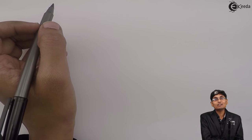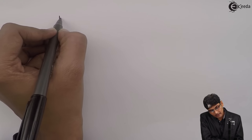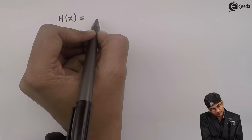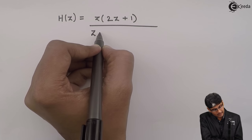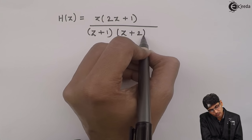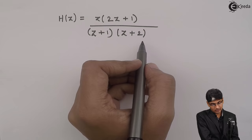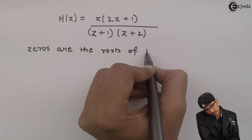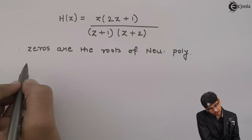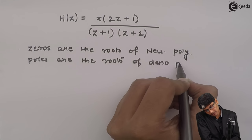Hello friends, today let us see the significance of poles and zeros in a transfer function. For example, let us take a transfer function as z(2z+1) divided by (z+1)(z+2). This is a given transfer function with a numerator and a denominator. Zeros are the roots of the numerator polynomial, whereas poles are the roots of the denominator polynomial.